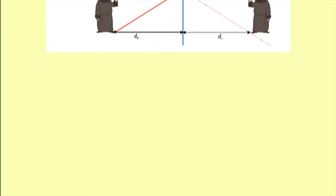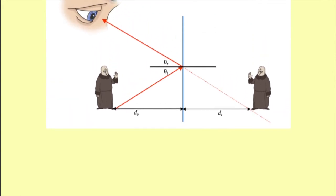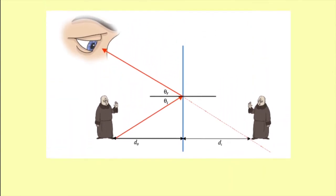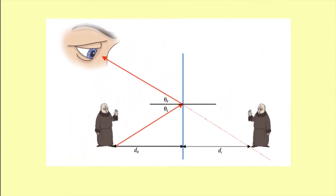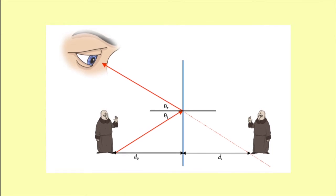Images formed on a plain mirror may have seemed to come from a place behind the mirror. This is because the image seen on the mirror looks exactly the same as the object. However, one big difference is that the image is laterally inverted or flipped. These images are called virtual images because no rays actually pass through the image and it can't be formed on a screen.